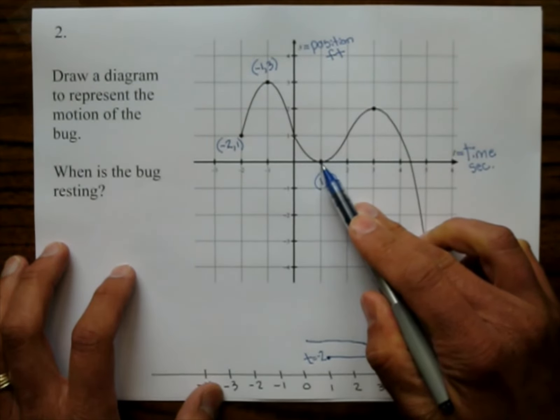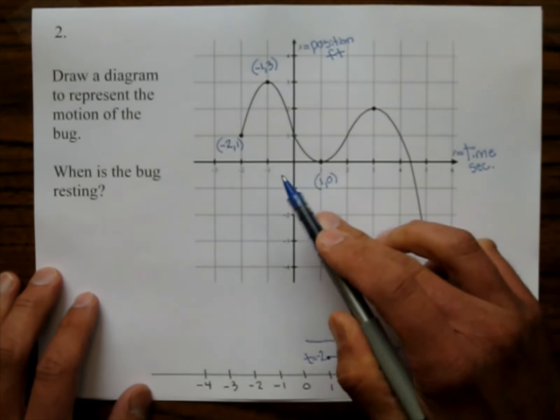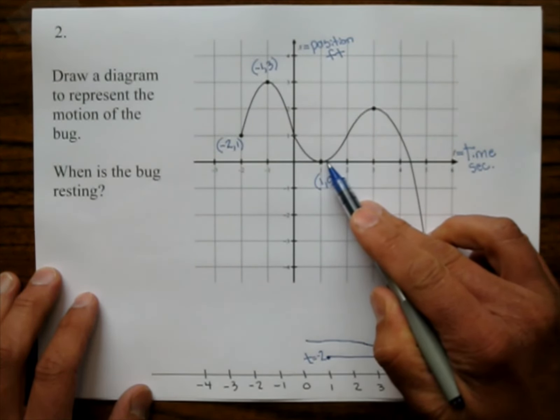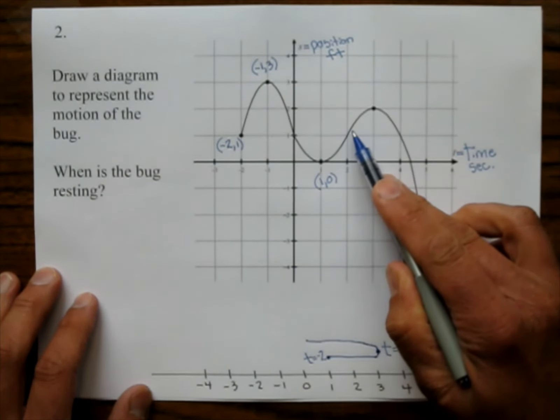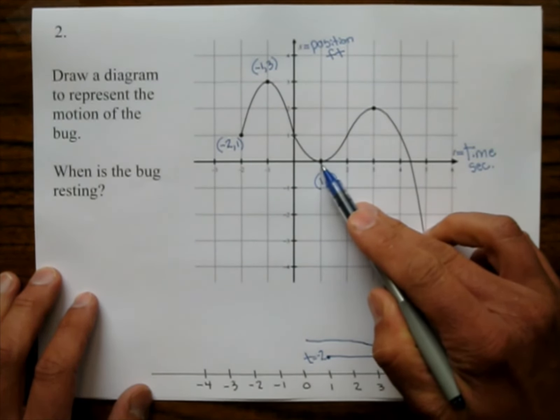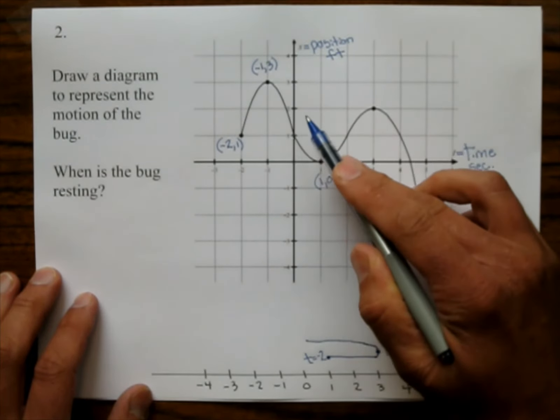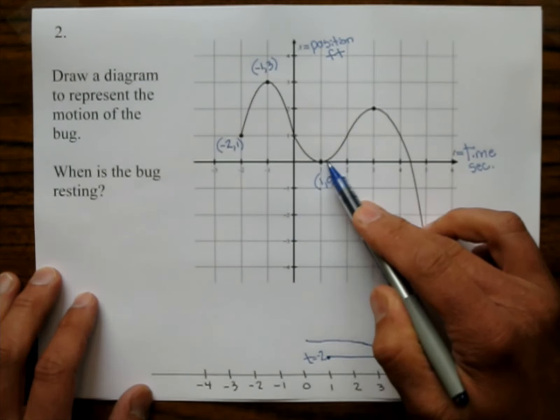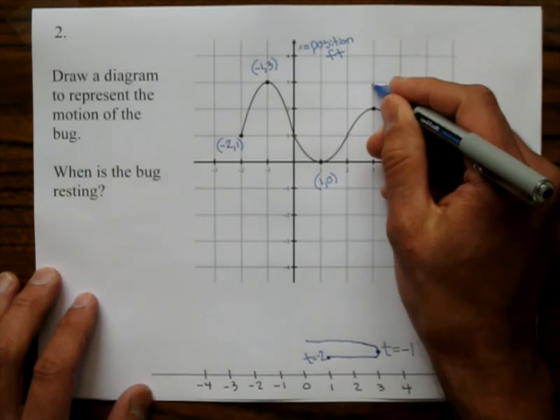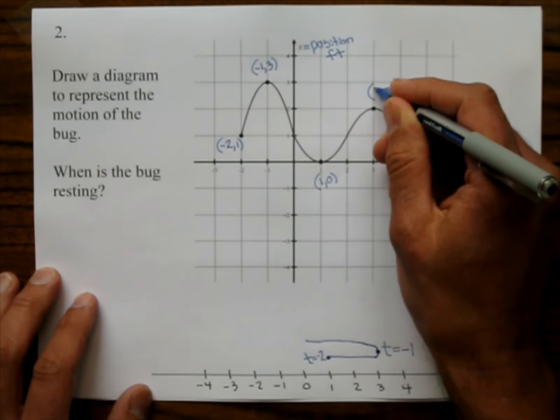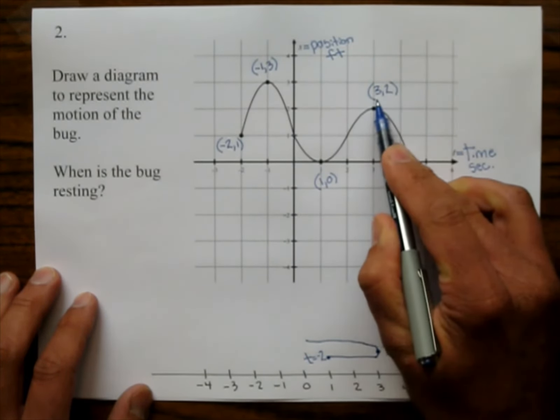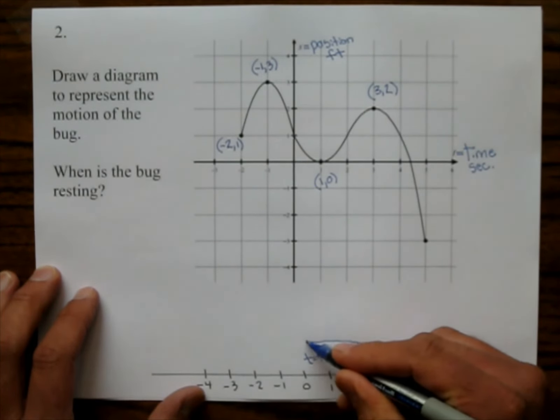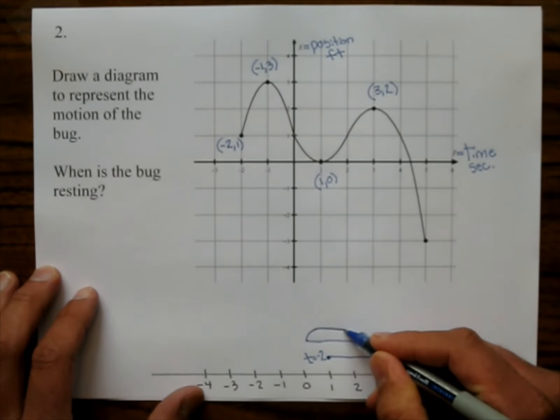So now he's at position 0. Remember, the position is denoted with the y-coordinate. And then what's going to happen? Now the y-coordinate is going to increase again. And it looks like right here is a turnaround. It looks like when you have the tops of hills and the bottoms of valleys, that's when the bug turns around. So then he starts heading to this point right here, which is 3, 2. So at time 3, he's at 2. So on the diagram down here, he's going to turn around and then go to 2.